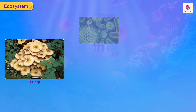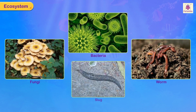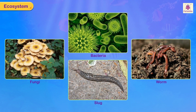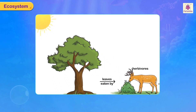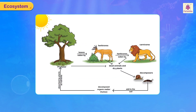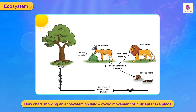There are more than one lakh different types of organisms that are decomposers. Look how different members of the ecosystem depend on each other. In this flow chart, we see how the cyclic movement of nutrients takes place.